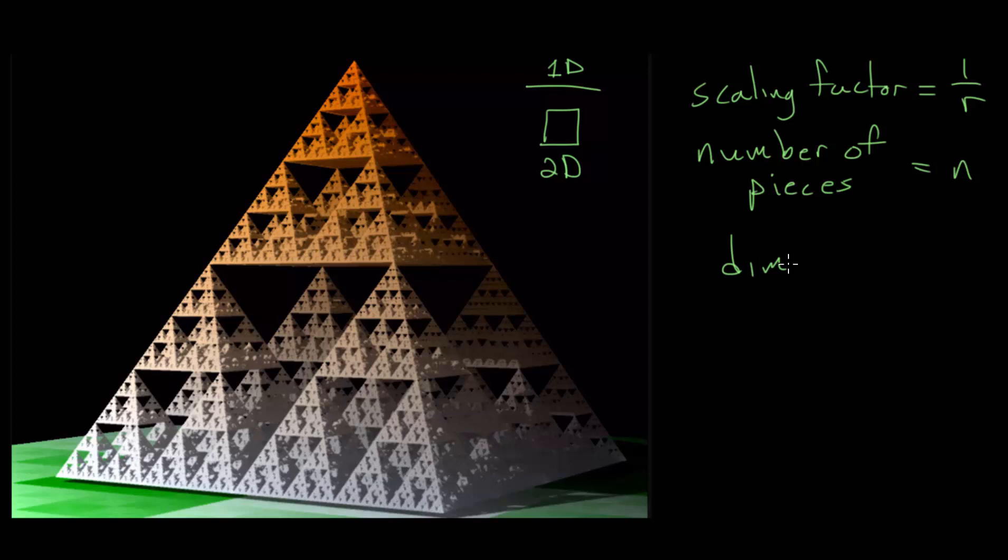And then the dimension of the object of the fractal, we can call capital D, then the relationship between these three quantities is that r, when raised to the d power, gives us n, the number of pieces.